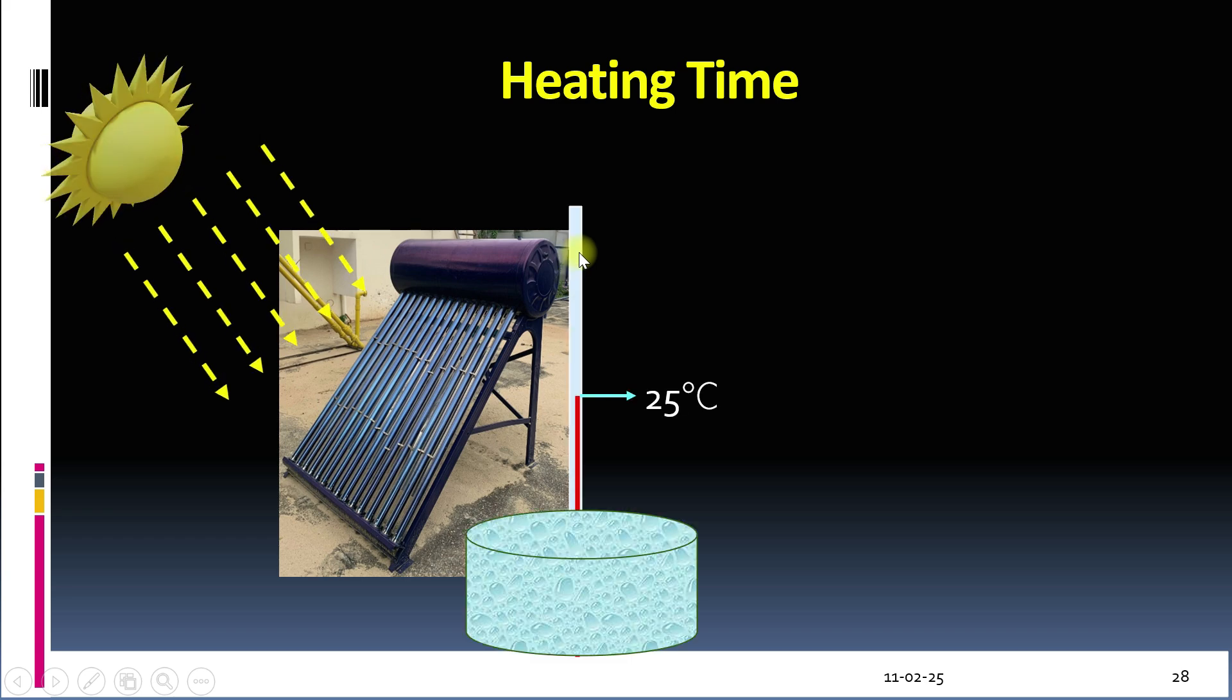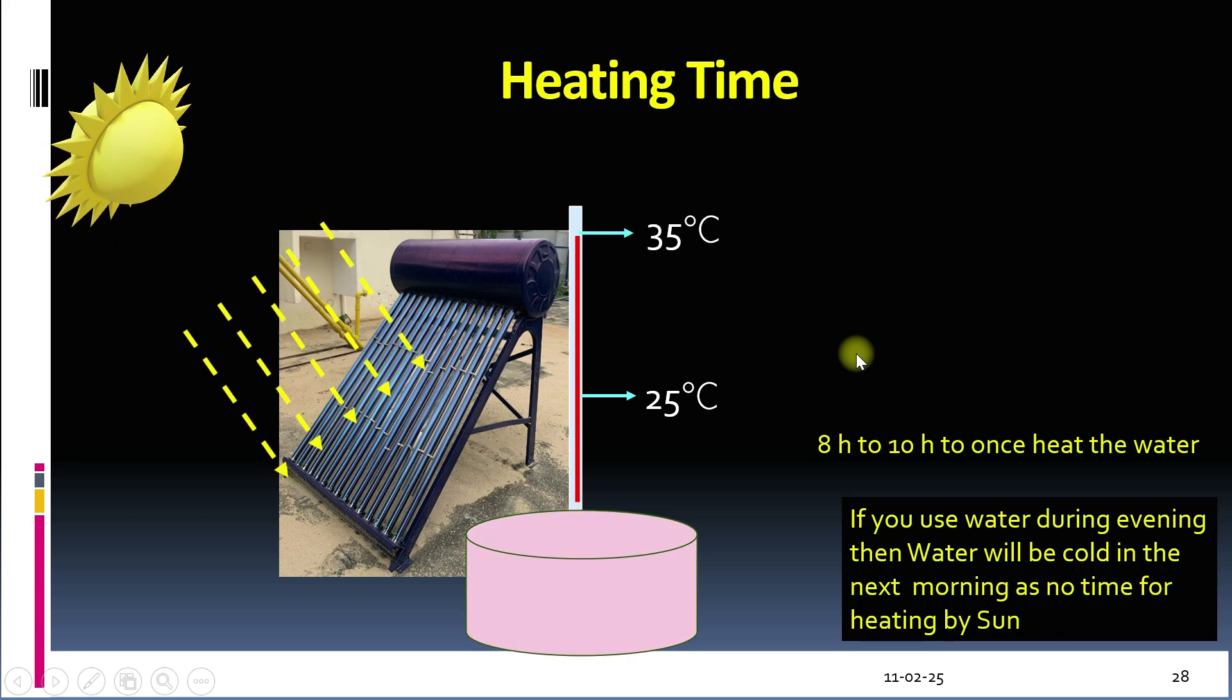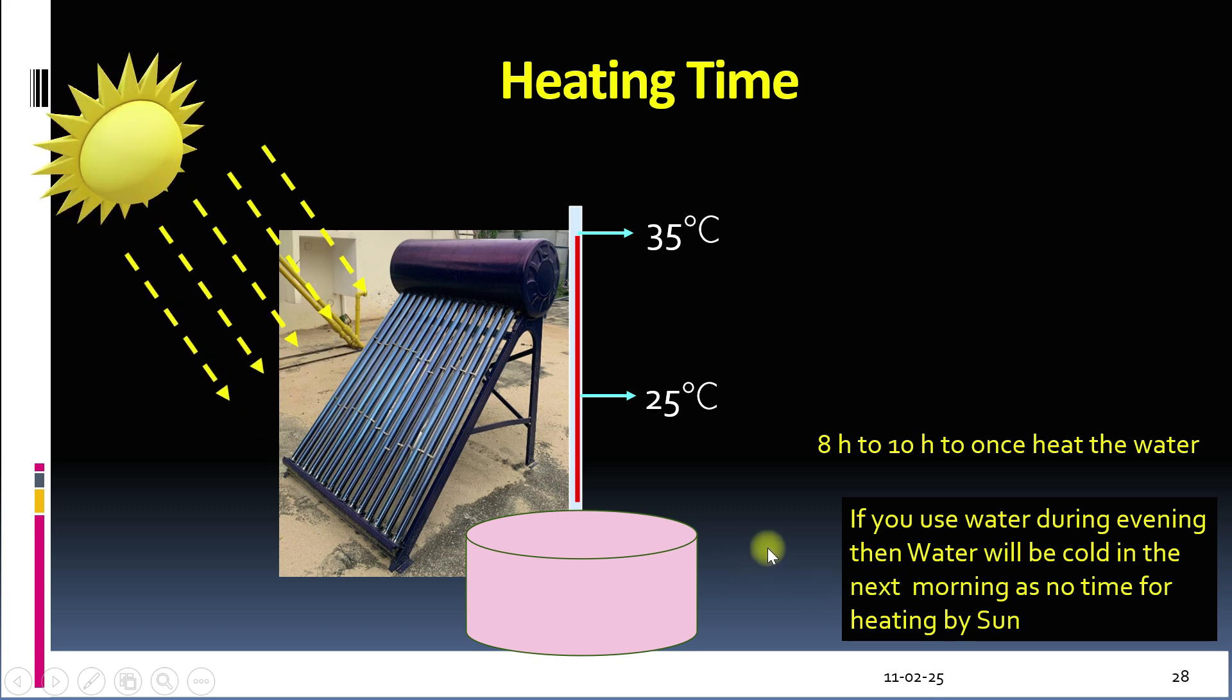Finally, how long does it take to heat the water? Typically, it takes 8 to 10 hours to fully heat the water. For practical use, hot water from solar water heaters is used once a day, preferably in the morning, to allow the water to heat throughout the day.